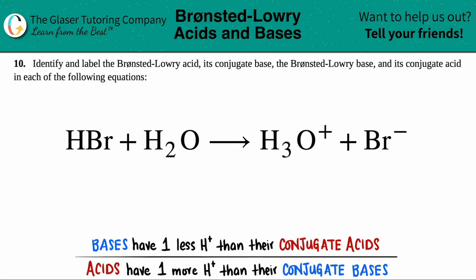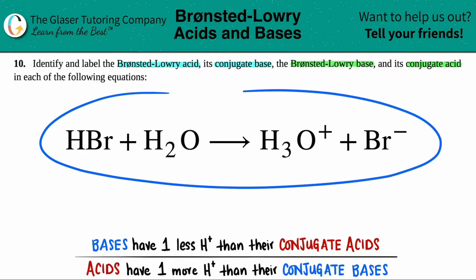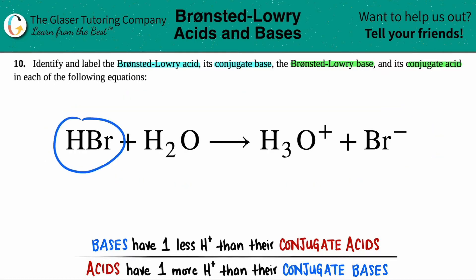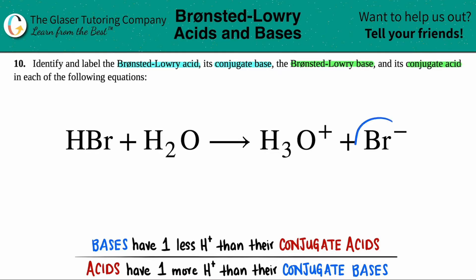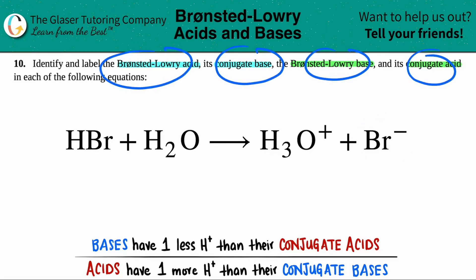Number 10: identify and label the Brønsted-Lowry acid, its conjugate base, and the Brønsted-Lowry base and its conjugate acid in each of the following equations. We have this equation right here. For HBr plus H₂O, which yields H₃O⁺ plus Br⁻, we need to find out these four things.